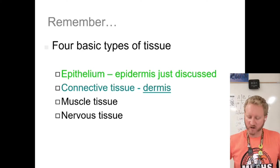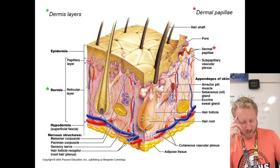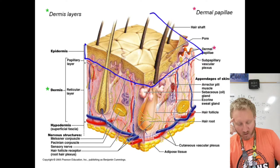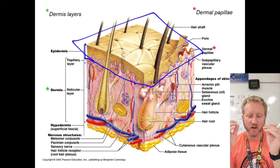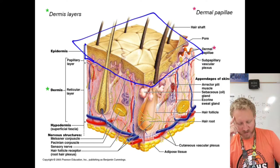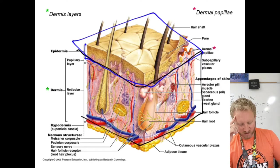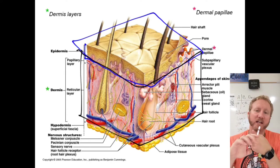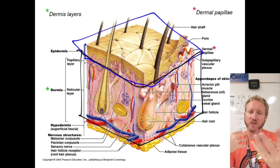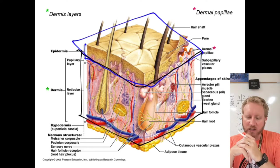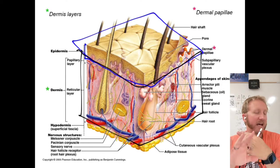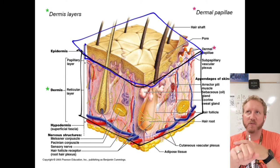Everything we just described is in a very thin layer. The majority of your skin is actually the dermis — all that pink tissue. Your dermis is very strong, flexible connective tissue. Cells found here include fibroblasts, which produce fibers; macrophages, a type of white blood cell; mast cells, also white blood cells responsible for the immune response; and other general white blood cells.